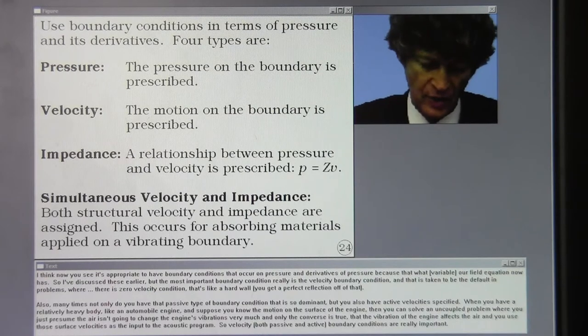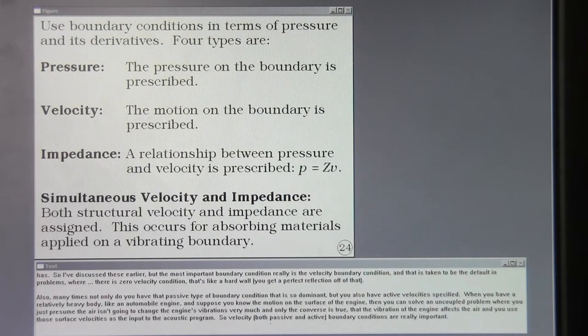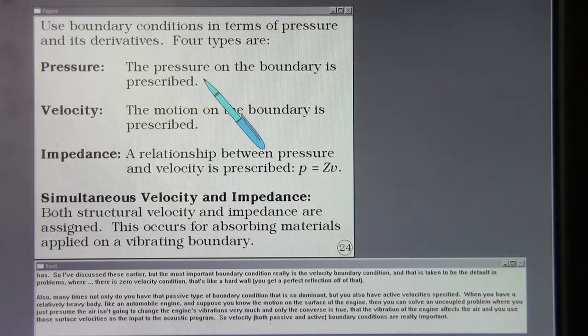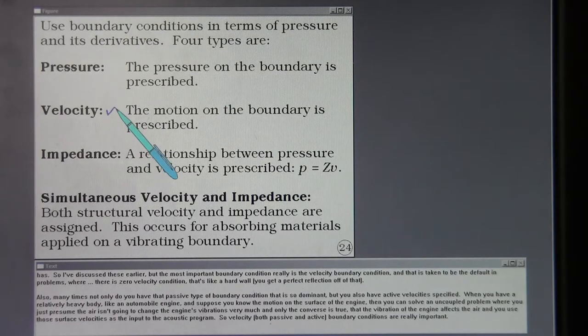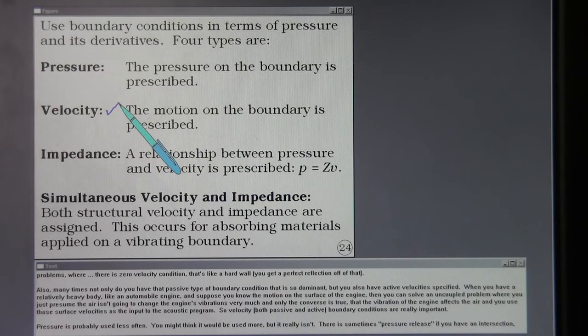I think now you see it's appropriate to have boundary conditions that occur on pressure and derivatives of pressure because that's what our field equation now has. The most important boundary condition really is the velocity boundary condition. And that's taken to be the default in problems where if there's zero velocity condition that's like a hard wall. You get a perfect reflection off of that.